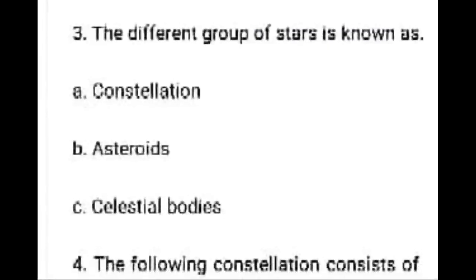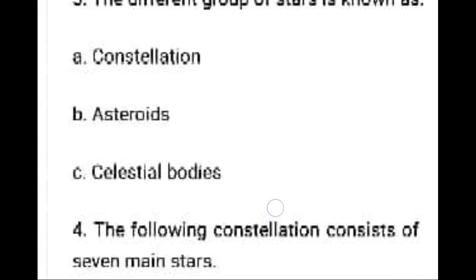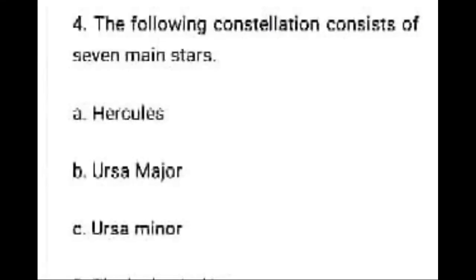The different group of stars is known as a constellation. Question 4: Which of the following constellations consists of 7 main stars? The right answer is Ursa Major.